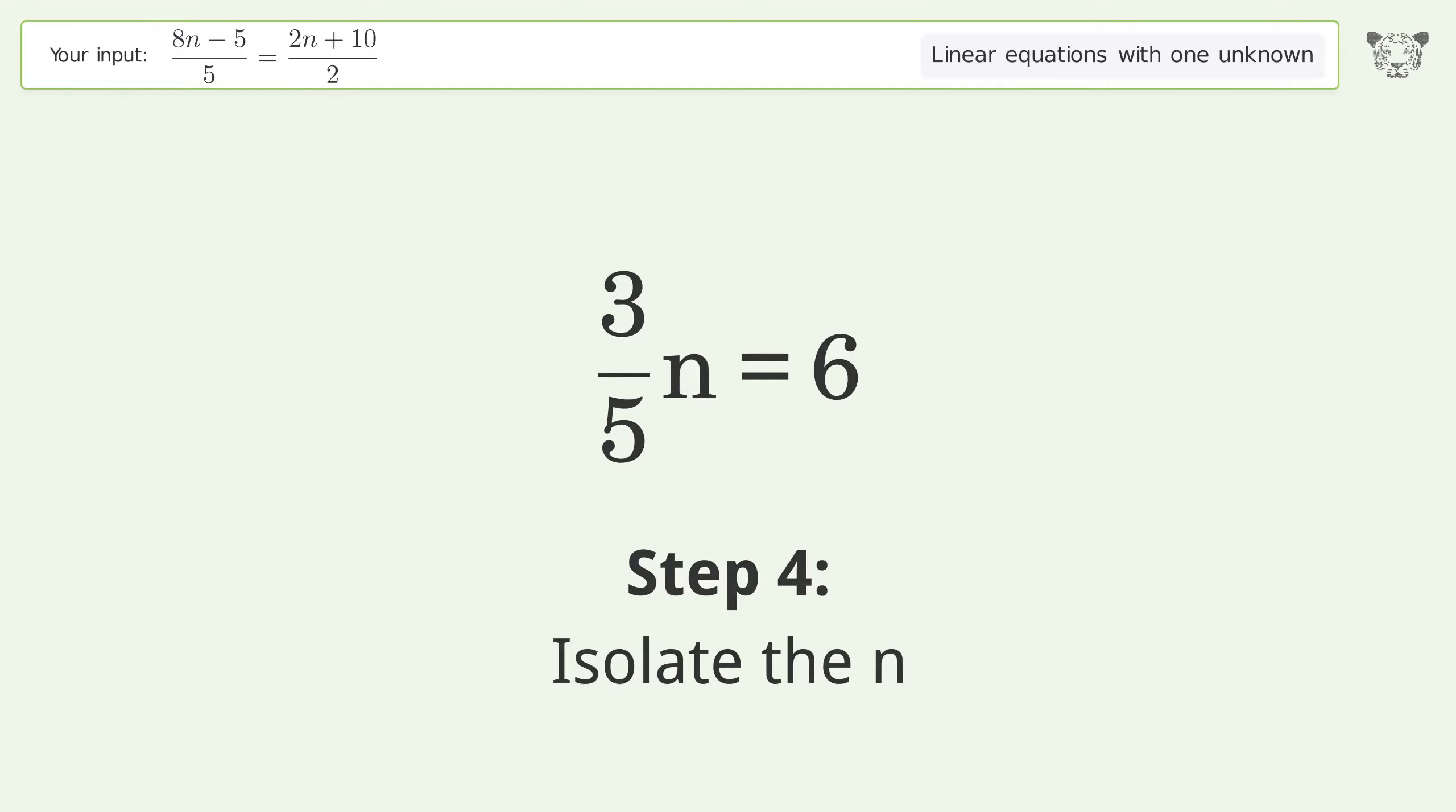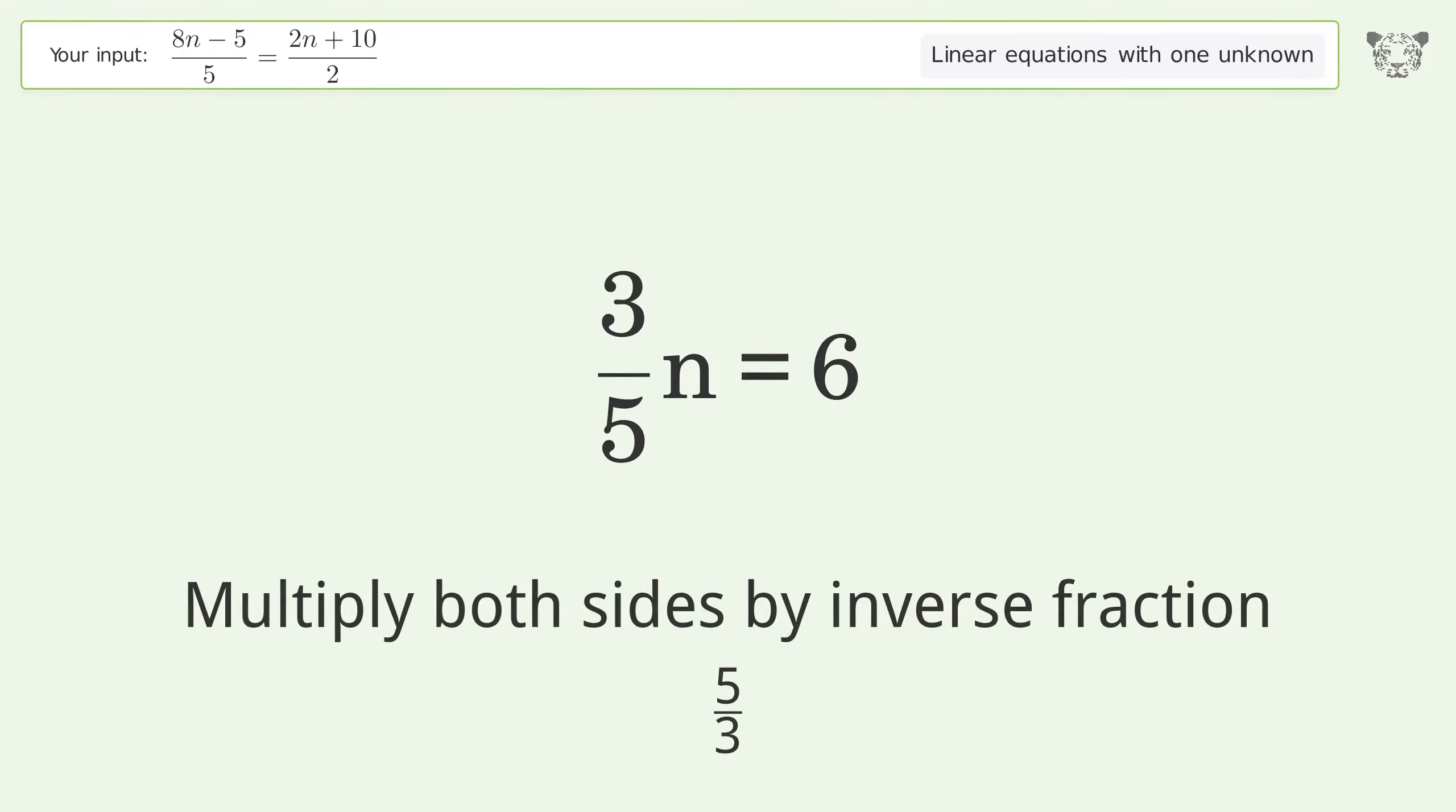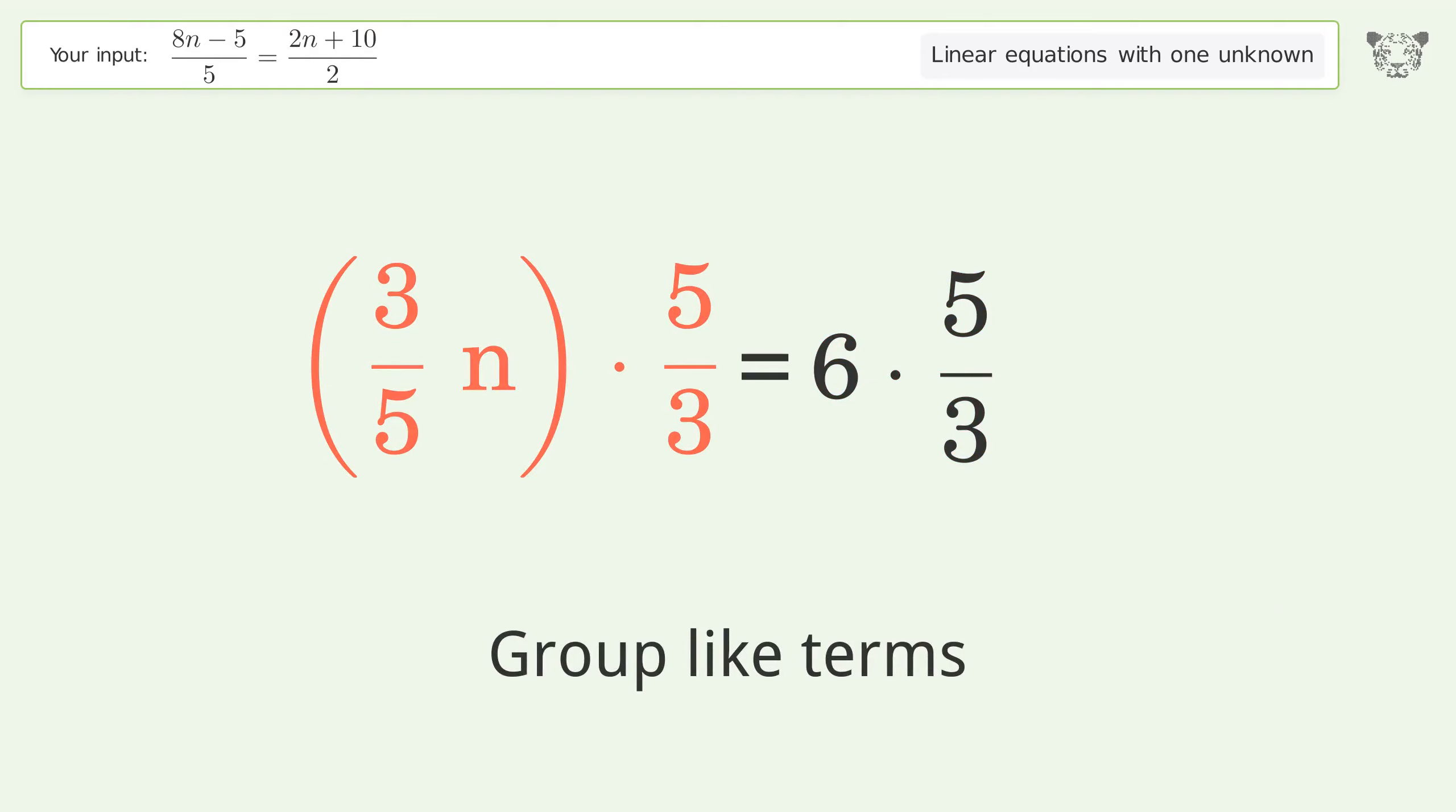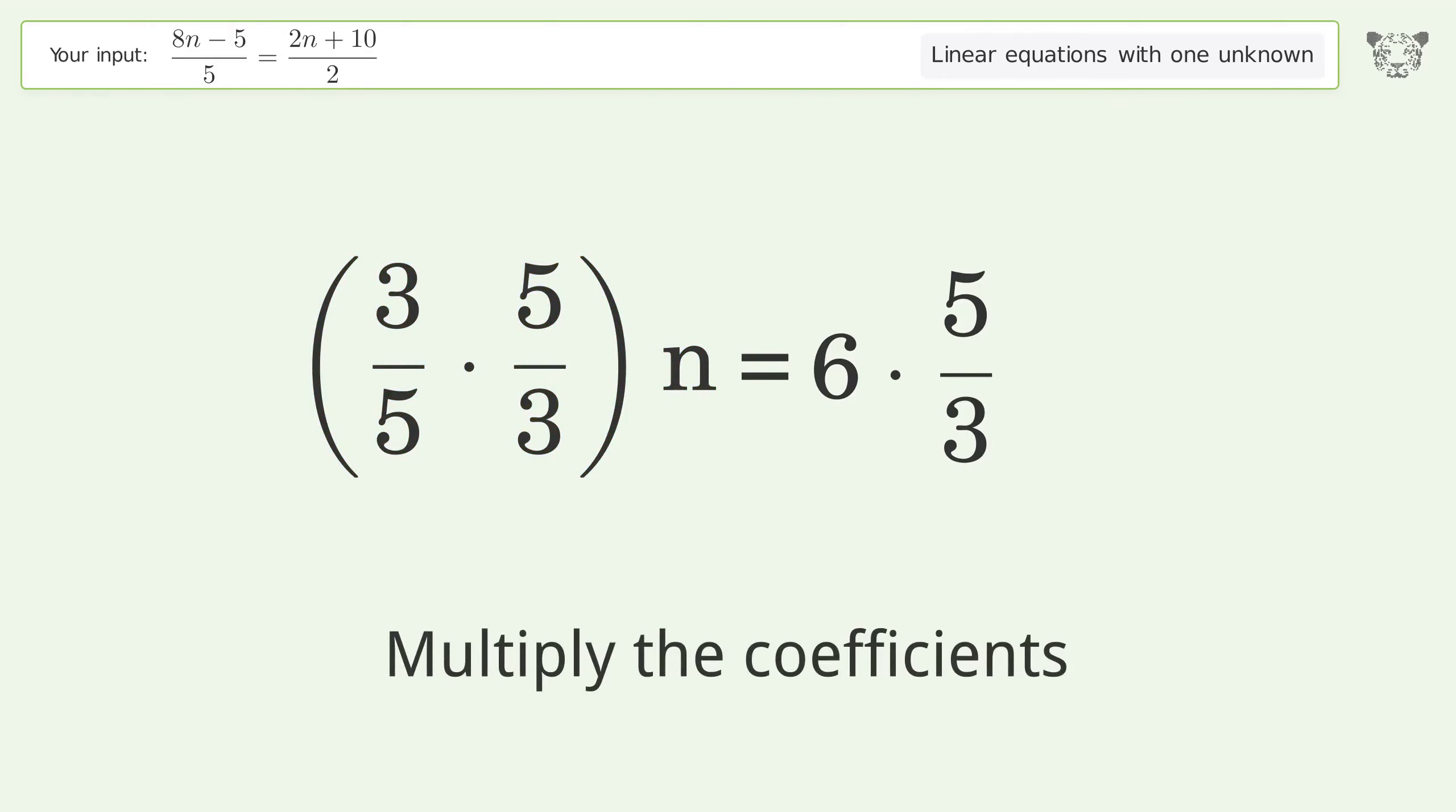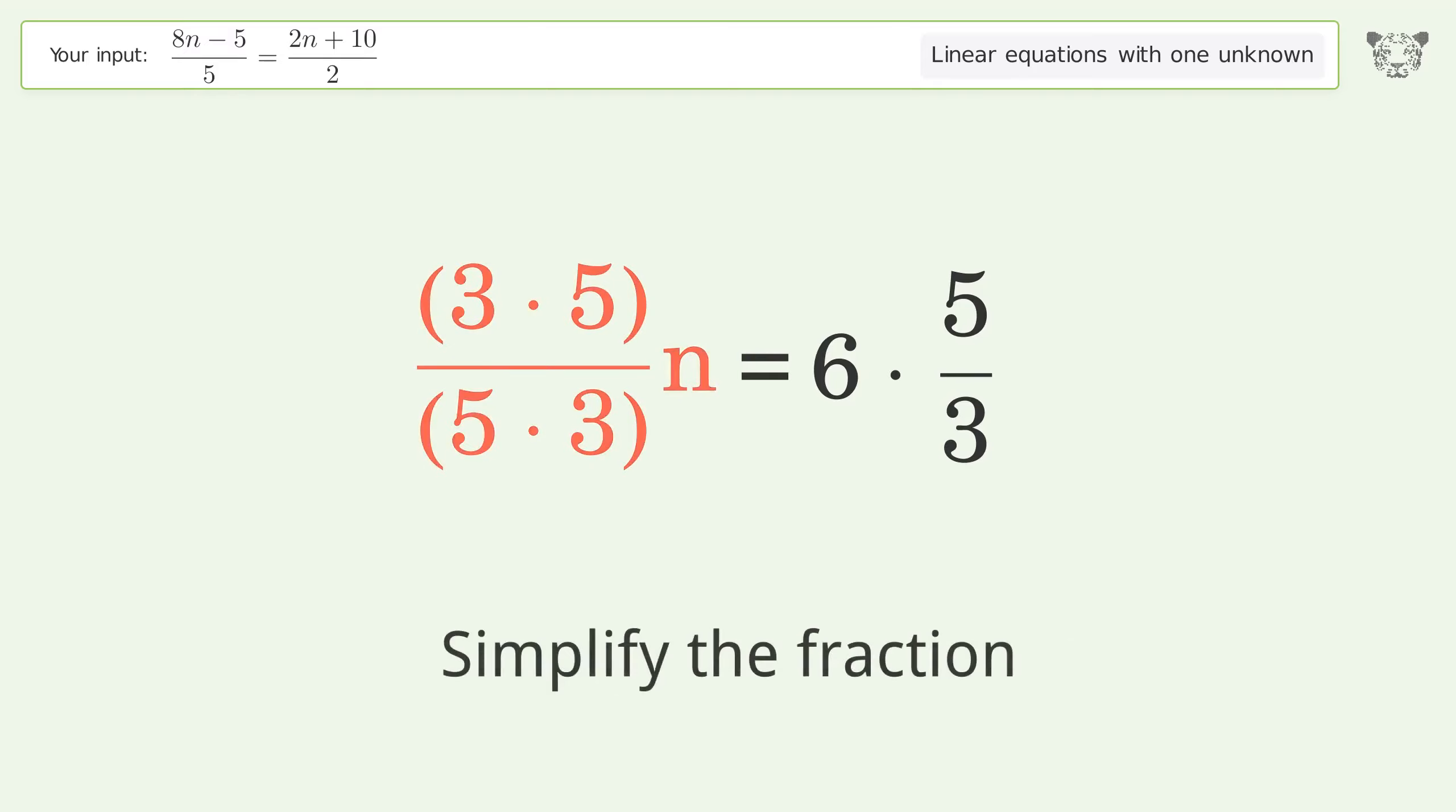Isolate the n. Multiply both sides by inverse fraction 5 over 3. Group like terms. Multiply the coefficients. Simplify the fraction.